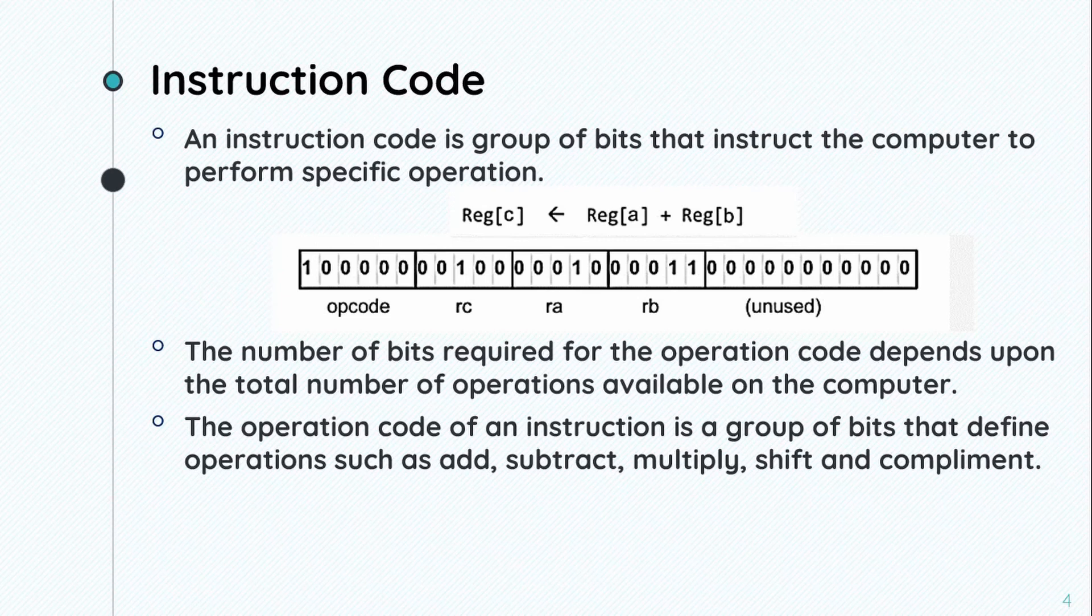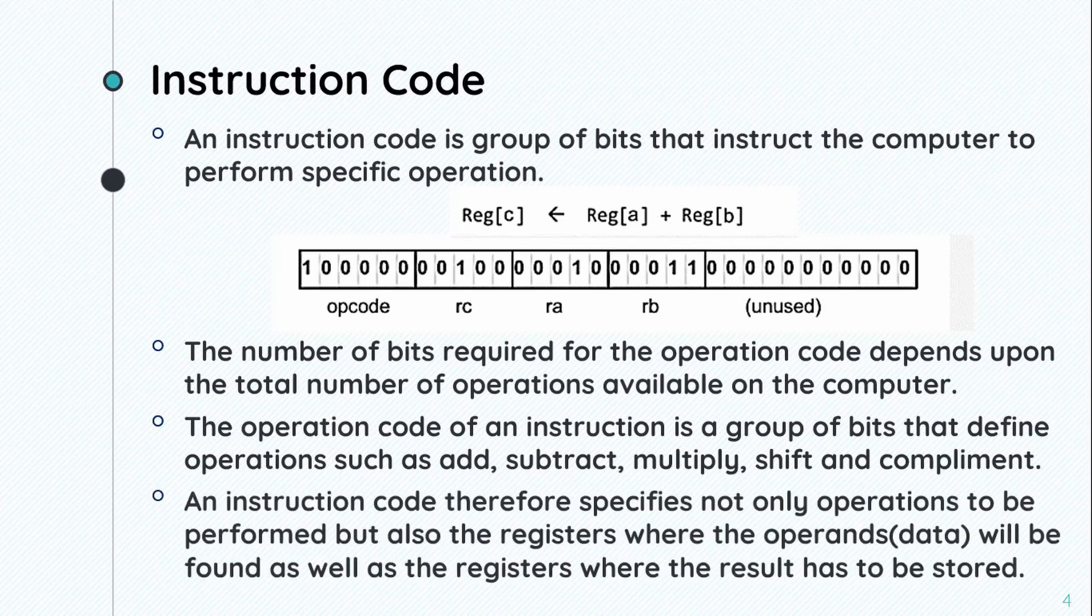The operation code of an instruction is a group of bits that define operations such as add, subtract, multiply, shift and complement. An instruction code therefore specifies not only the operations to be performed,